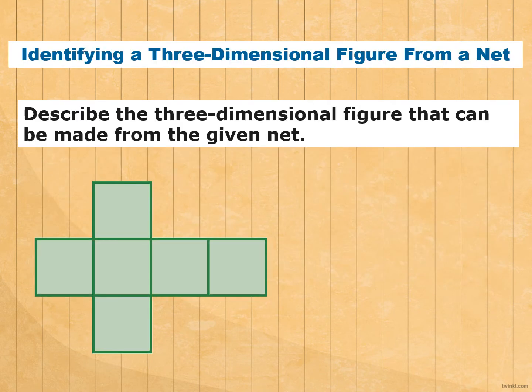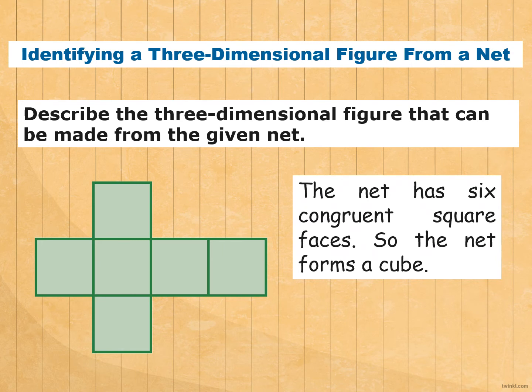Let us identify the three-dimensional figure from a net. From here, we have six squares. What do you think? Correct. It is a cube. The net has six congruent square faces. So, the net forms a cube.